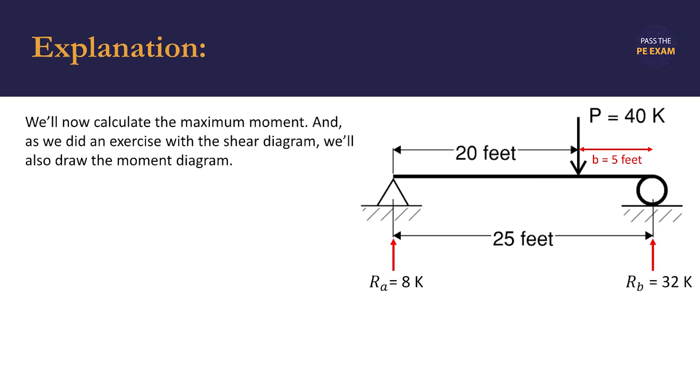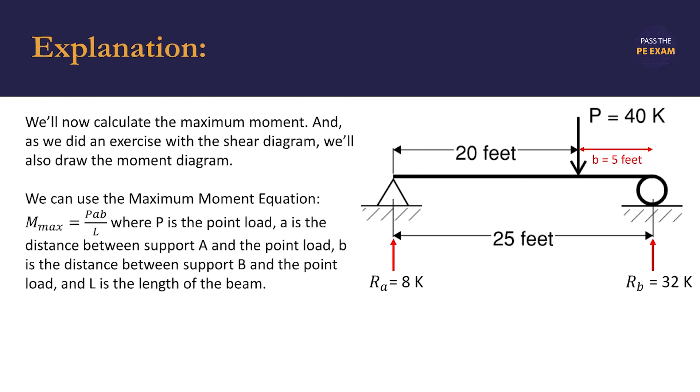Now that we've calculated the maximum shear and drawn the shear diagram, we'll calculate the maximum moment. Just like with the shear diagram, we'll also draw the moment diagram as you may encounter this on the exam. Since we're only interested in the maximum moment, we can use the equation M_max = P×A×B/L, where P is the point load, A is the distance between support A and the point load, B is the distance between support B and the point load, and L is the beam length.